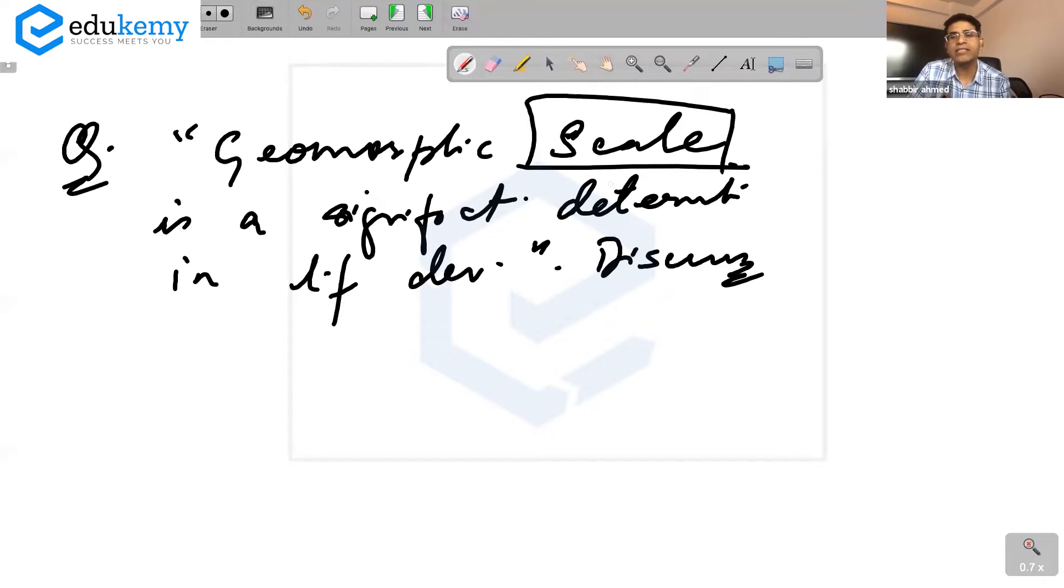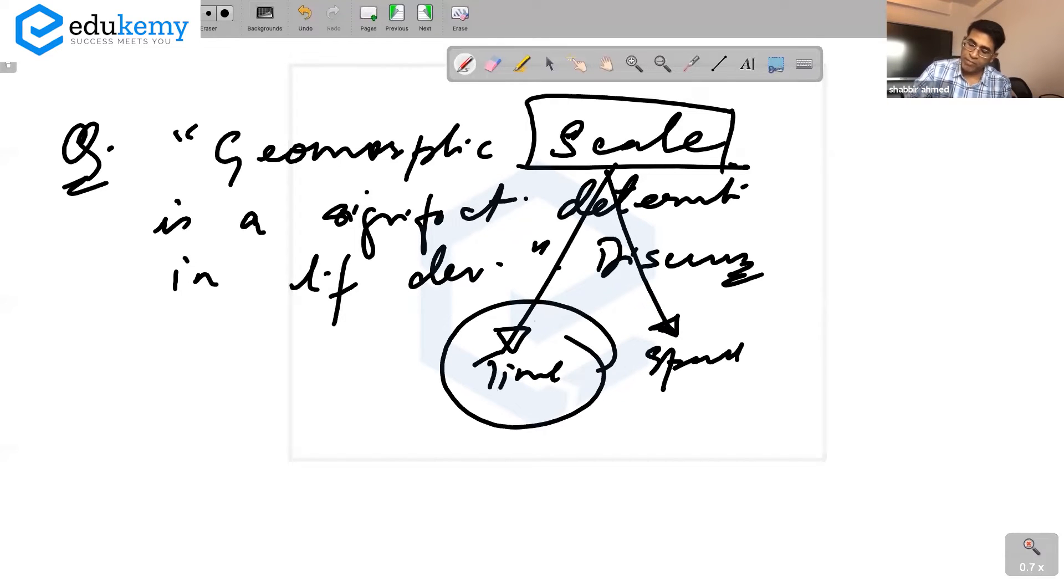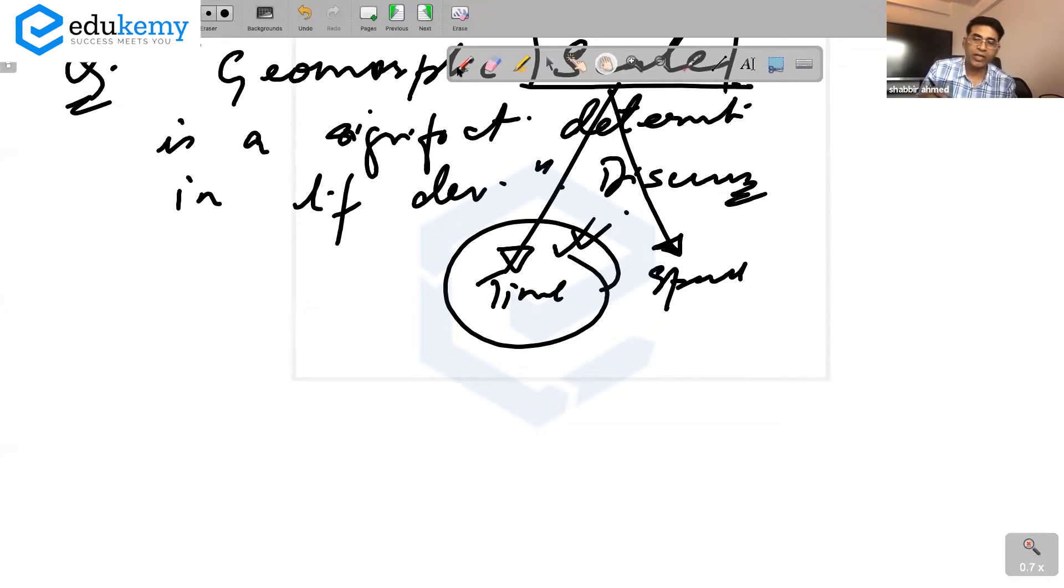The main factor here is time. Geomorphic scale is a significant determinant in landform development. So the word scale can mean time aspect, it can also mean space, but the more important one is the time aspect.